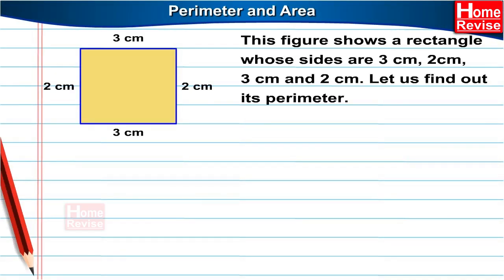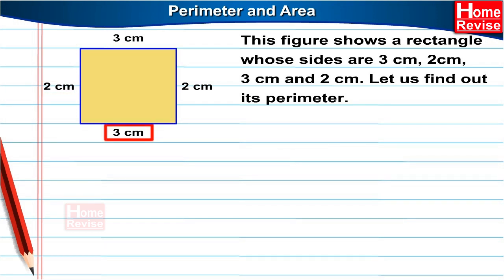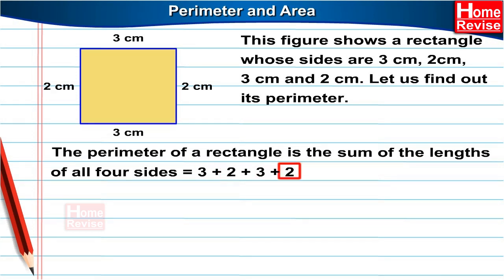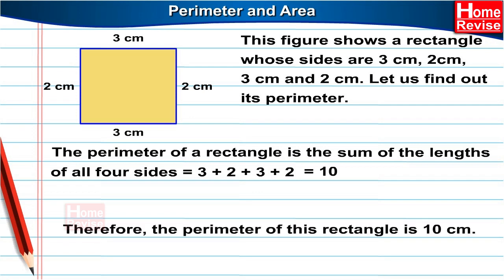This figure shows a rectangle whose sides are three centimetres, two centimetres, three centimetres and two centimetres. Let us find out its perimeter. The perimeter of a rectangle is the sum of the lengths of all four of its sides. So it is three plus two plus three plus two, which is equal to ten. Therefore, the perimeter of the rectangle is ten centimetres.